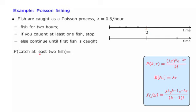So we're talking about the probability of catching k fish during a time interval of length two, where k ranges from two to infinity. This is the probability that the number of fish caught during these two time units is at least equal to two.